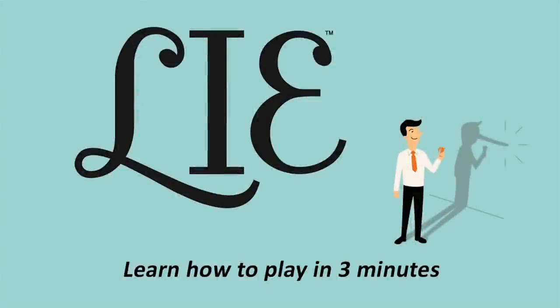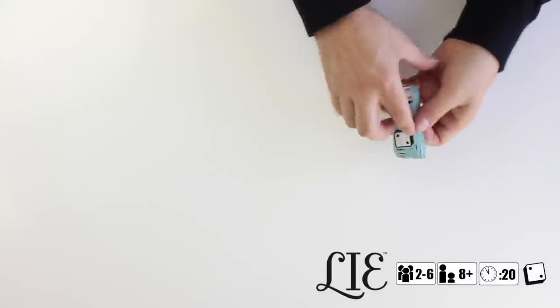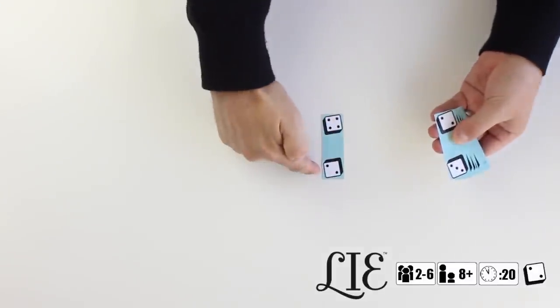In Lie, players bid and bluff over several rounds of speculation to be the last player remaining in the game. There are 30 cards in the game, each with a die face on the top and on the bottom. There are 10 of each of the six die faces in the game.